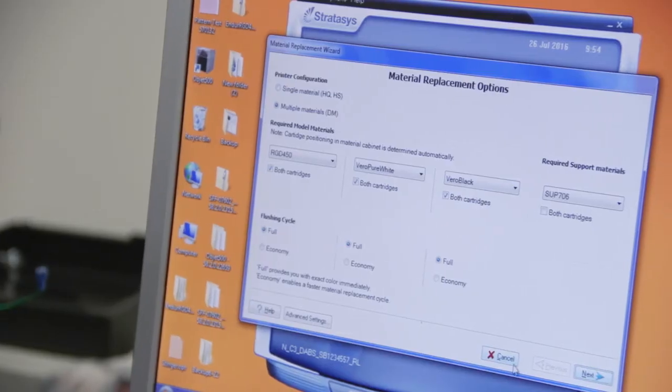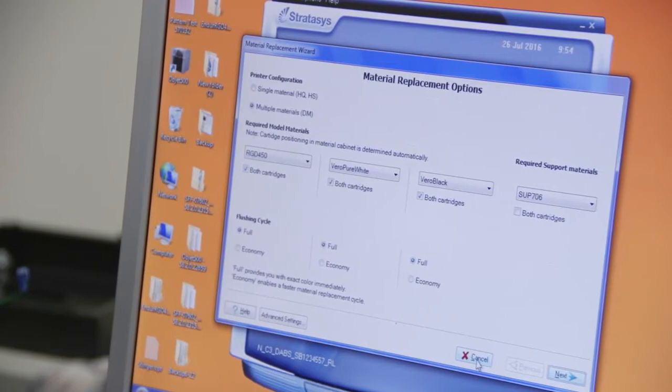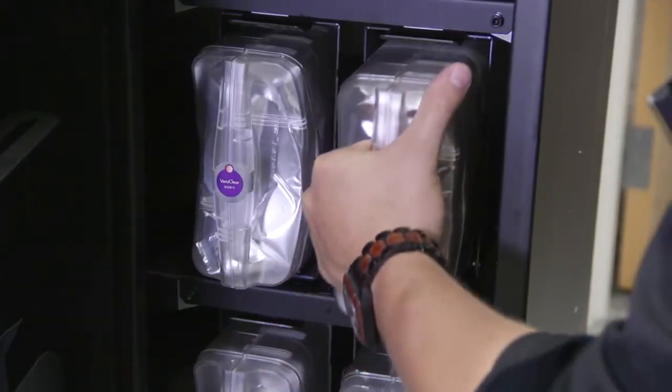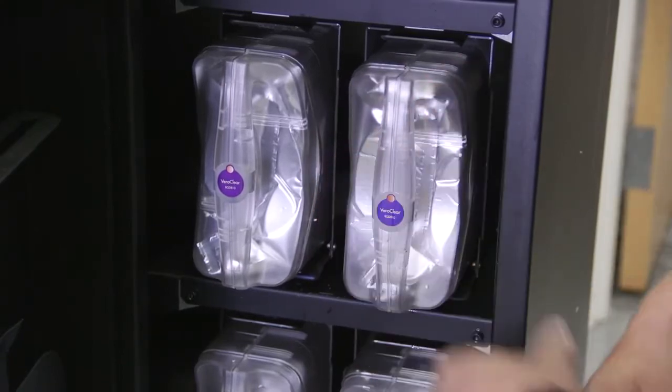Traces of previous materials affect the clarity of VeroClear parts. To prepare the printer for VeroClear printing, replace at least one of the currently installed cartridges with VeroClear.